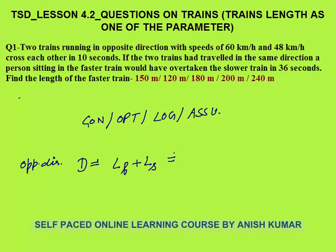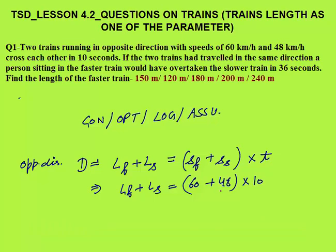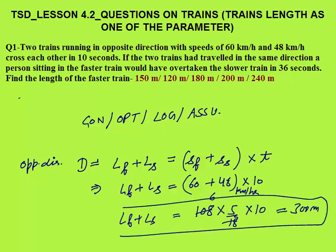Distance is always equal to speed multiplied by time. When two trains are in opposite directions, speed will be speed of faster train plus speed of slower train, multiplied by time. So Lf + Ls = (60 + 48) km/h × 10 seconds. Converting 108 km/h to m/s: 108 × 5/18 × 10 = 300 meters. So the combined length of both trains is 300 meters.